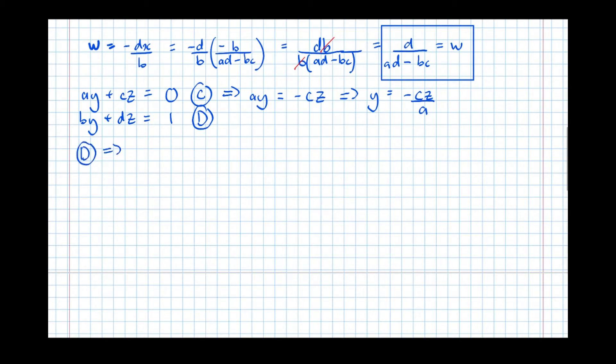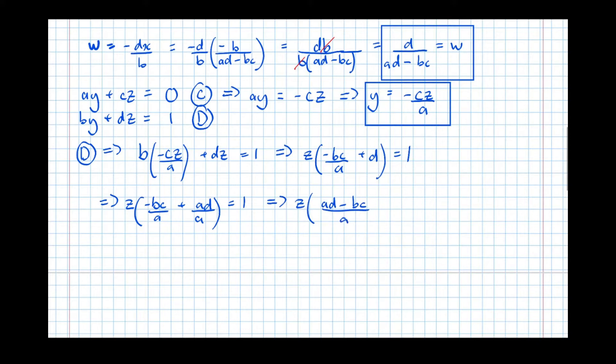Subbing that into the other equation. So now D implies that BY, so B times our expression for Y, which we got here. So B times minus CZ over A plus DZ equals 1. And taking out a factor of Z, Z bracket minus BC over A plus D equals 1. Now trying to put all of this over a denominator of A, we get Z bracket minus BC over A plus AD over A equals 1.